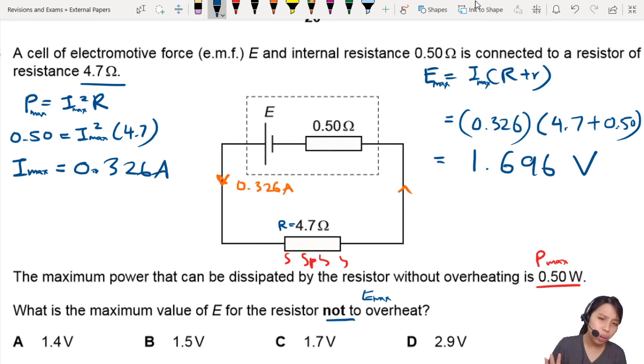And that is the highest you can go. If not, your resistor will overheat already. 1.696, the closer answer will be 1.7. So, the answer is C. Is it C? Yes, it is C.